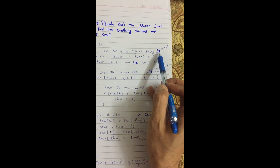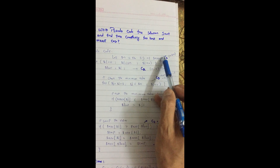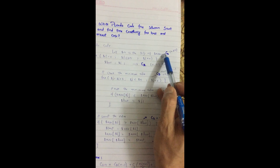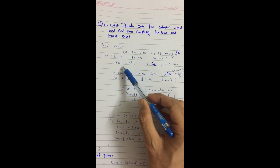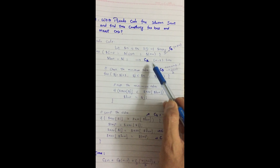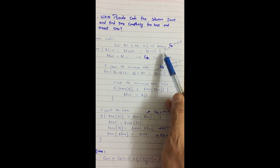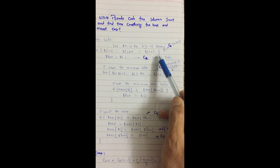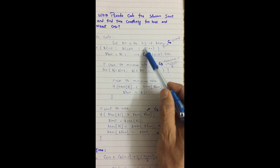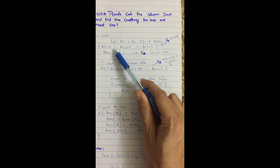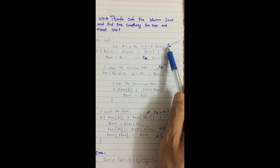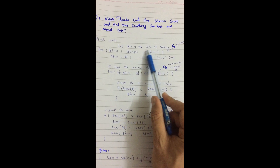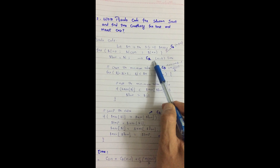Now let's analyze the time complexity. The outer for loop statement executes n times (it starts from 0 up to the length n). Inside the outer loop, the next statement executes n-1 times — one time less than the full length. This is because even when the condition fails, the condition check itself is counted, so the loop header runs n times and the body runs n-1 times.